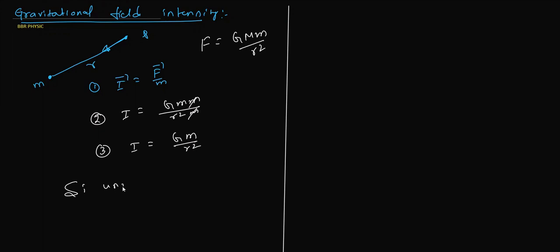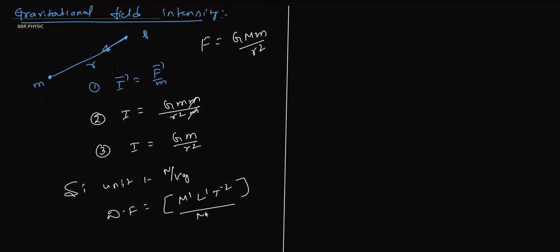The SI unit of gravitational field intensity is force per mass, i.e., Newton per kilogram (N/kg). The dimensional formula is force divided by mass: [MLT⁻²] / [M] = [LT⁻²], giving dimensions M⁰L¹T⁻².